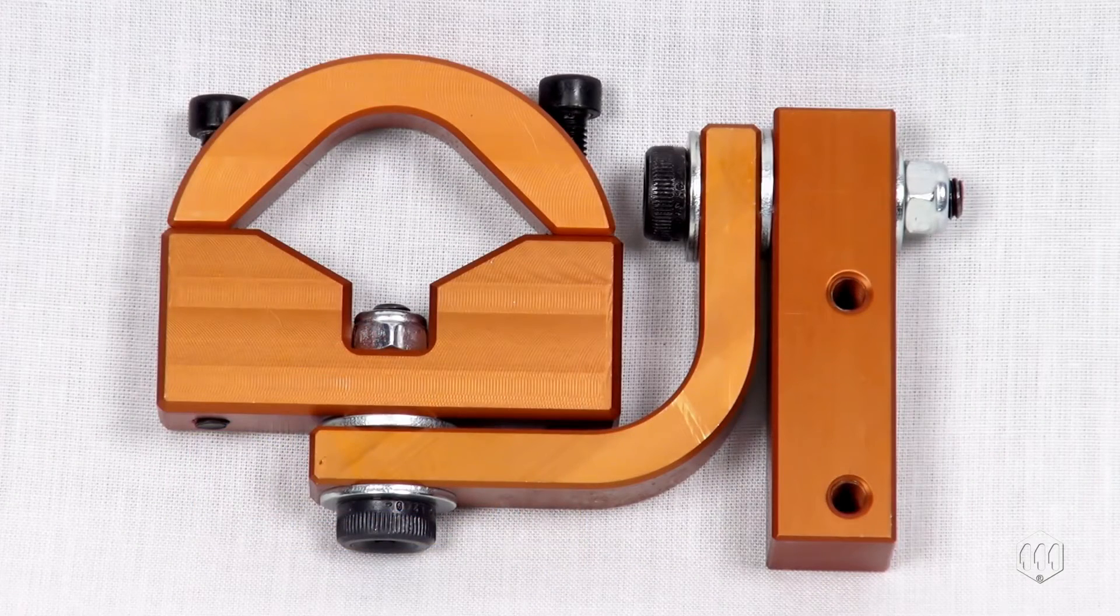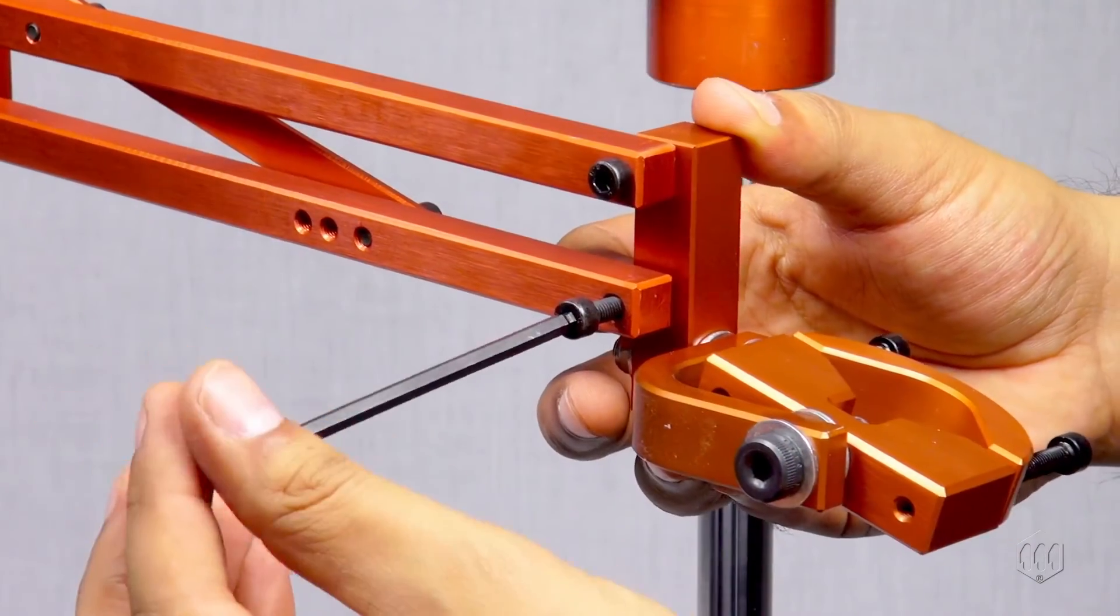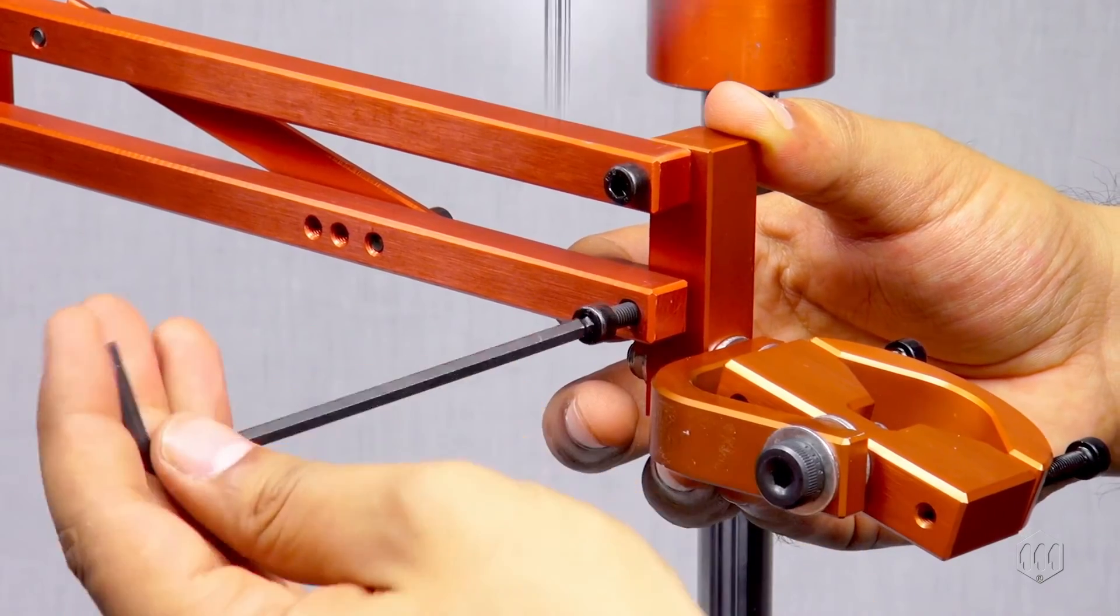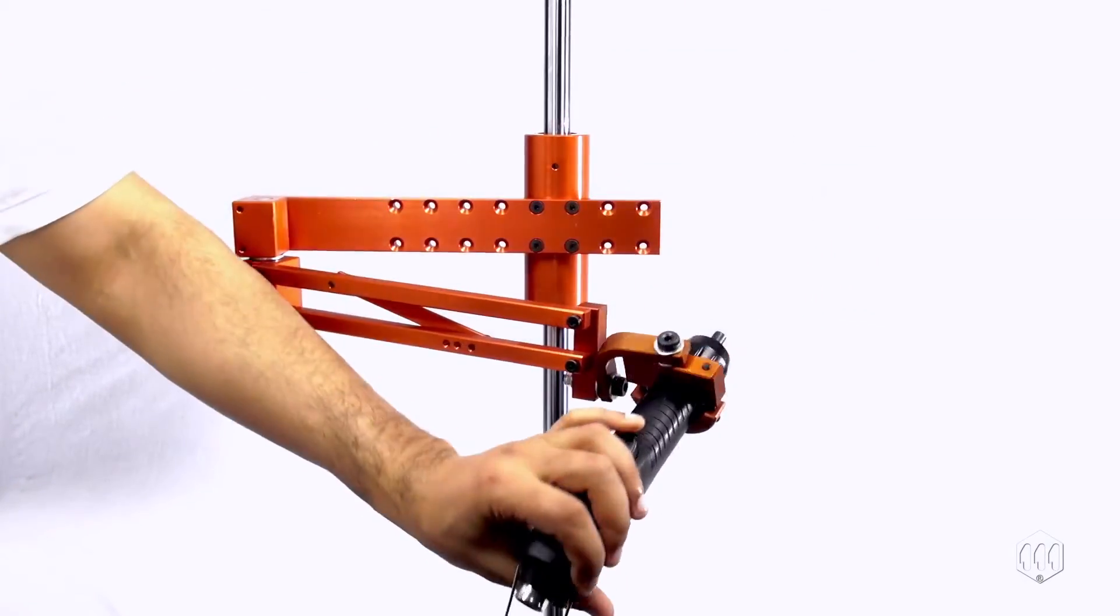A rotating tool clamp can be added to the arm too. It provides flexible movement for an electric or air tool.